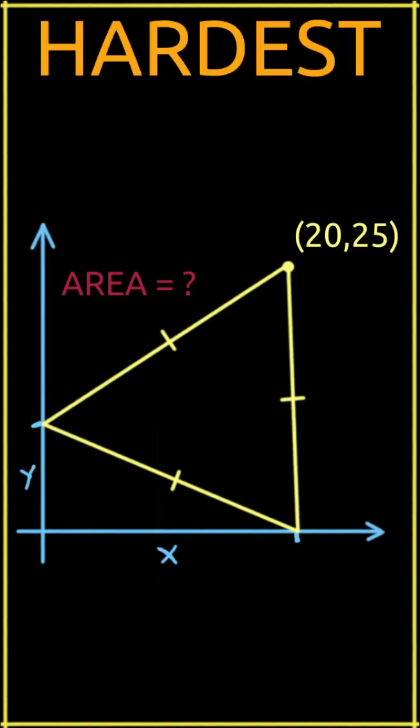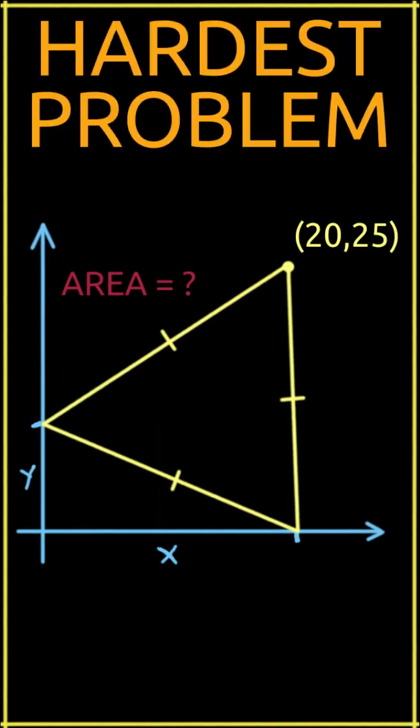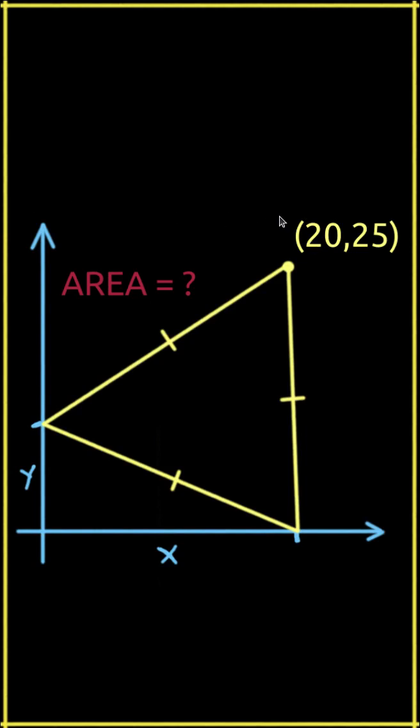This is the hardest problem I have seen on a middle school math test in 2025. We are given the coordinates of one corner of an equilateral triangle, which just happens to be 2025, and we know that the other two corners lie on the positive x and positive y axes.